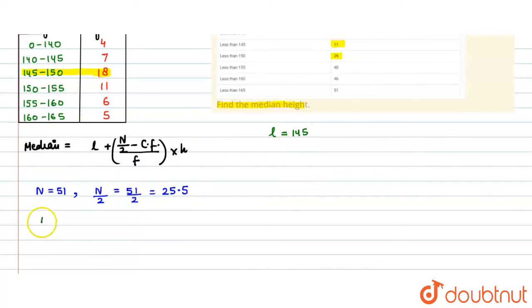Because we mention that the median class is 145 to 150. Lower limit is 145. The height of the class 150 minus 145 is 5. The cumulative frequency preceding class is 11. The normal frequency is 18.